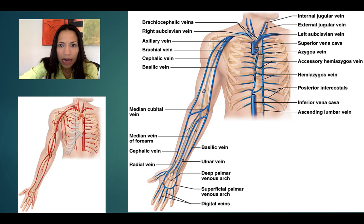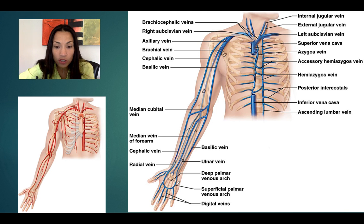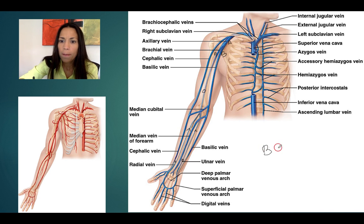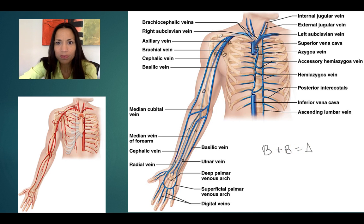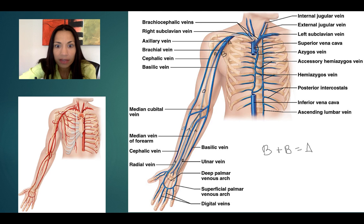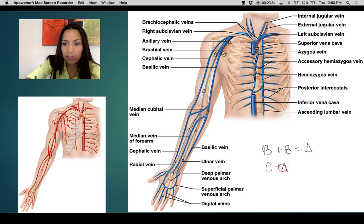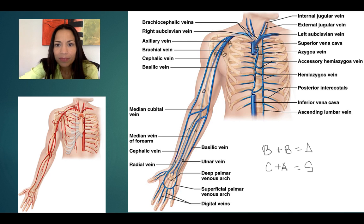Look at the brachial — how it receives blood and merges together with the basilic, a superficial vein located on the medial side of the arm. Brachial plus basilic equals axillary. Then the axillary vein receives blood from the large lateral cephalic vein. Cephalic plus axillary form the subclavian vein.